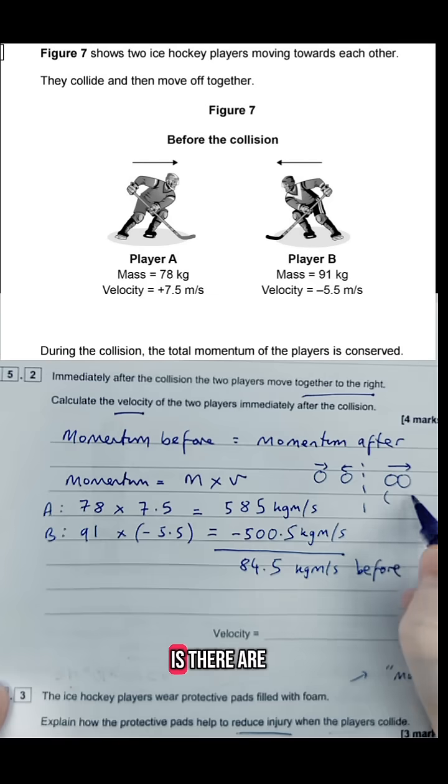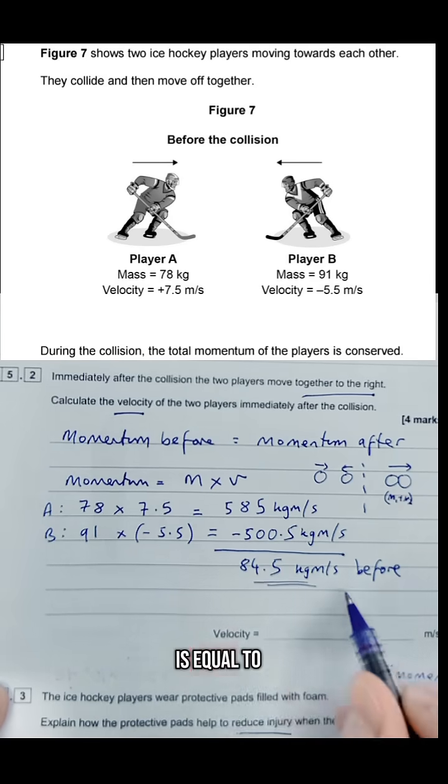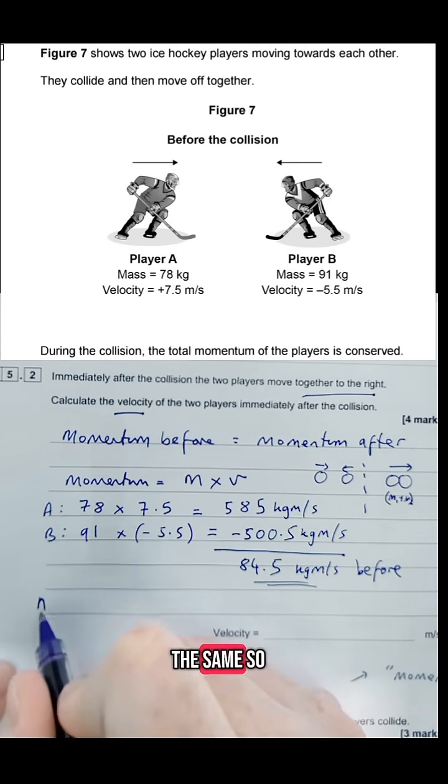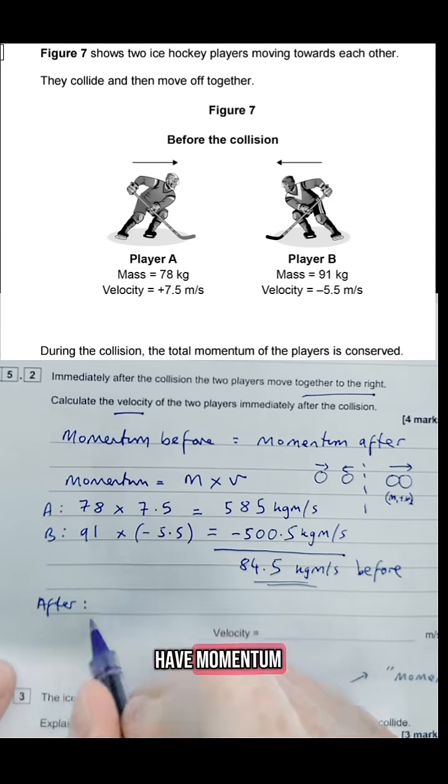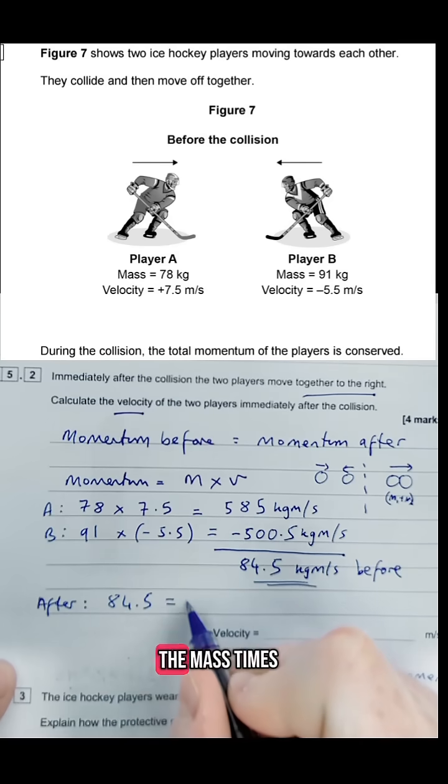So what that means is they're acting as one velocity. We can add together their two masses m1 and m2 together. So if I know momentum before is equal to 84.5, afterwards it's going to be the same. So after, we're going to have momentum is equal to 84.5 which is going to be equal to the mass times the velocity.